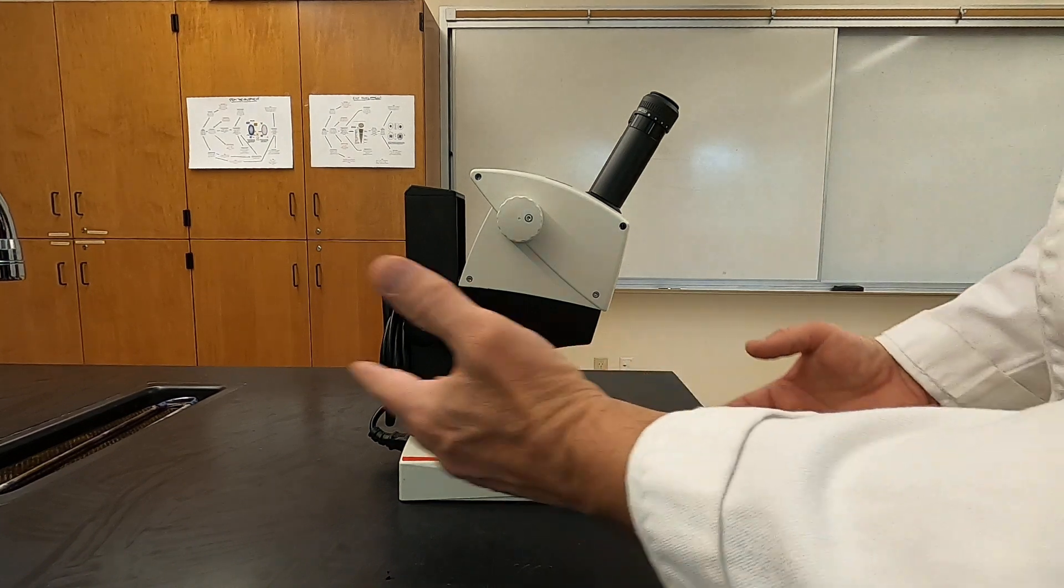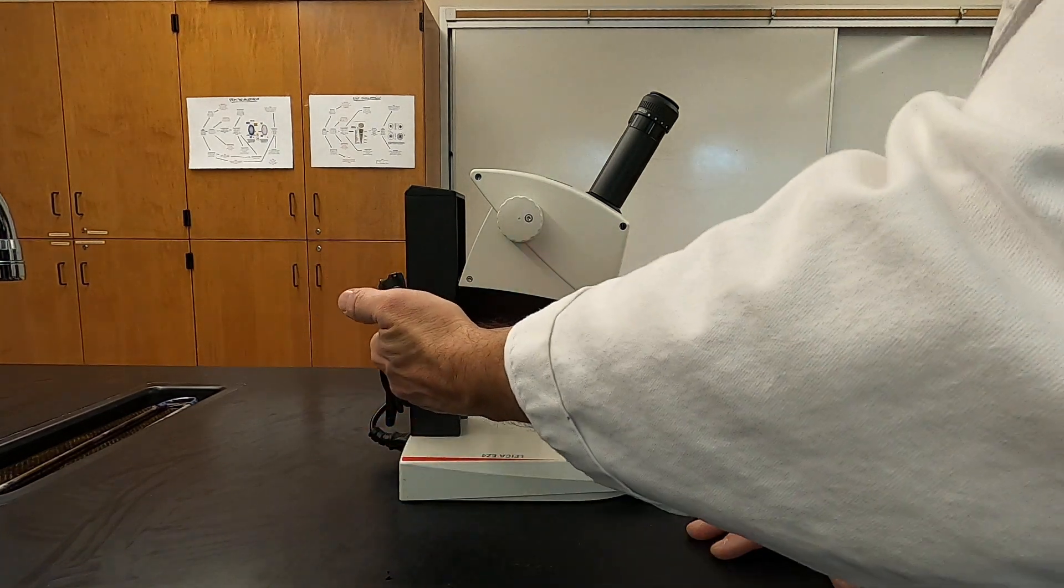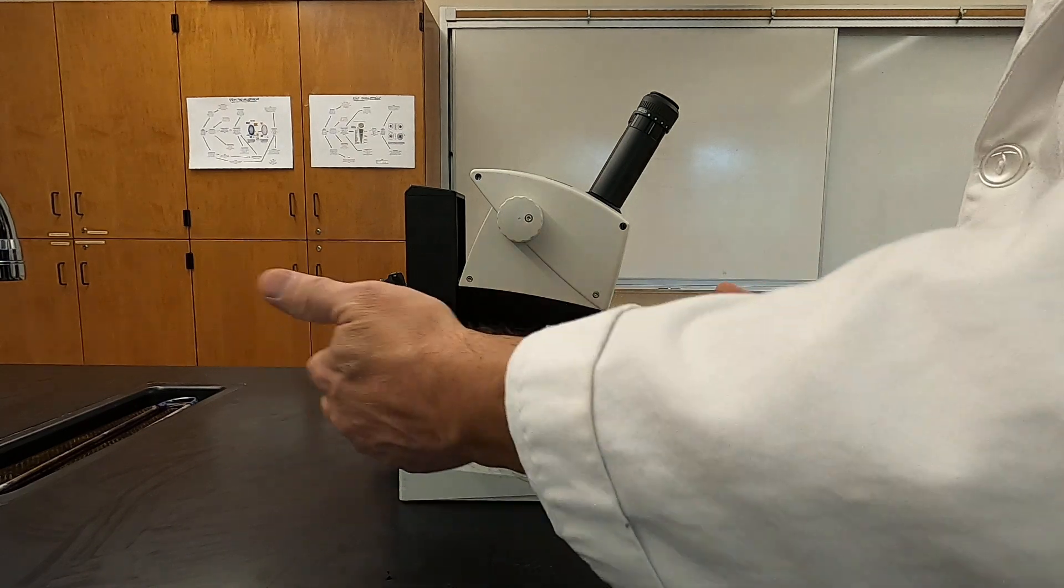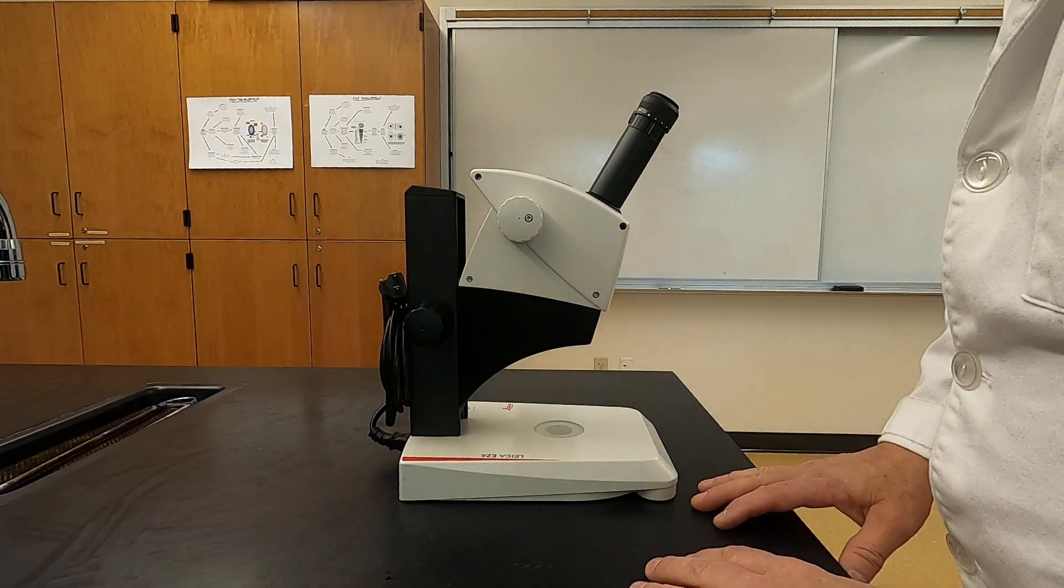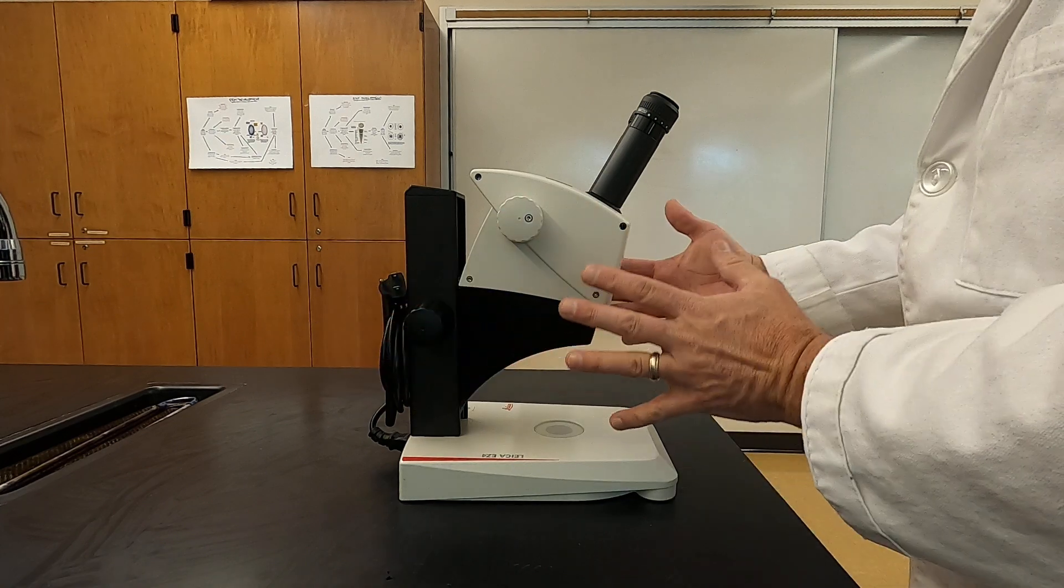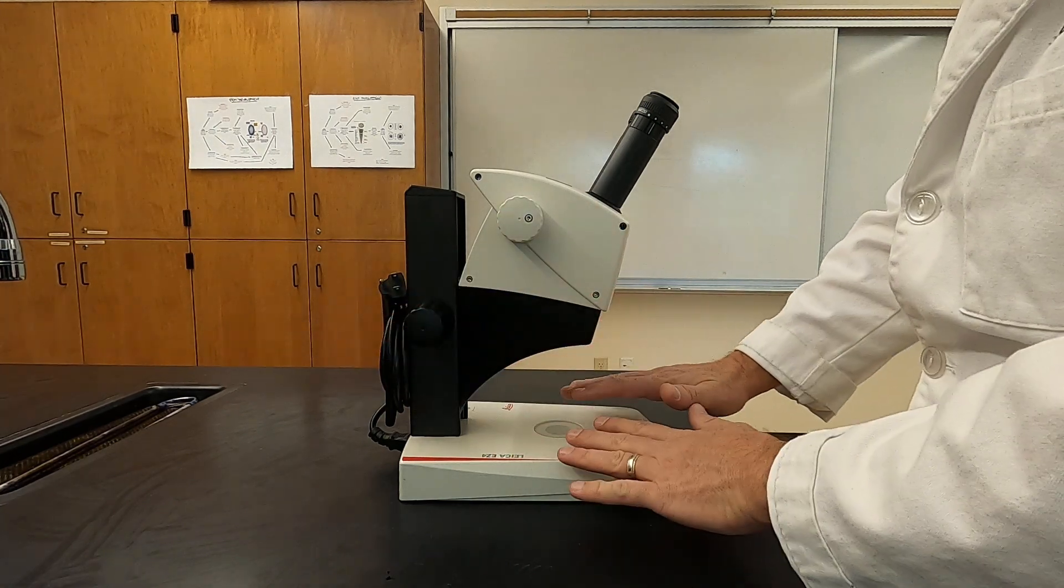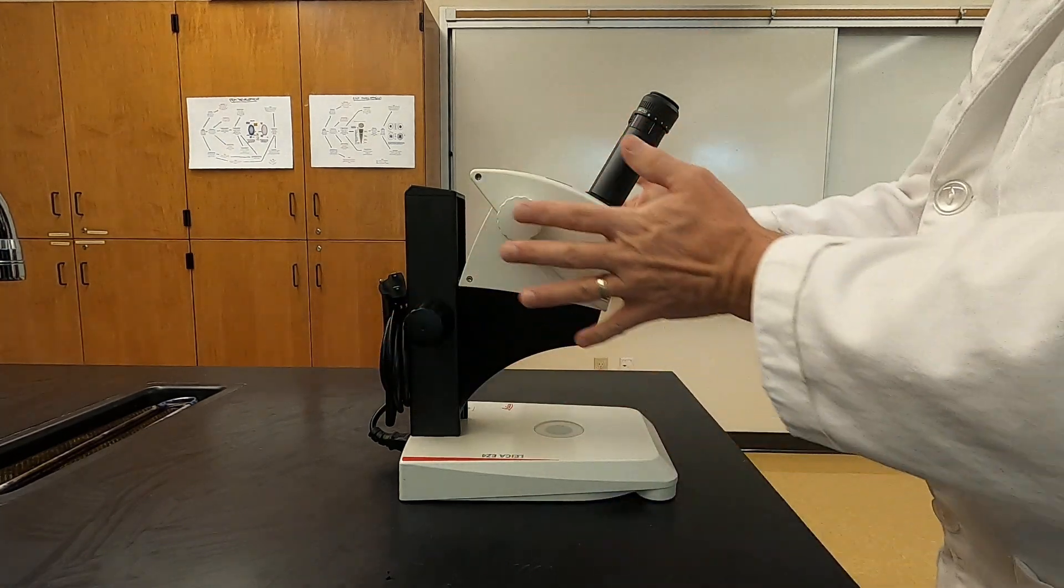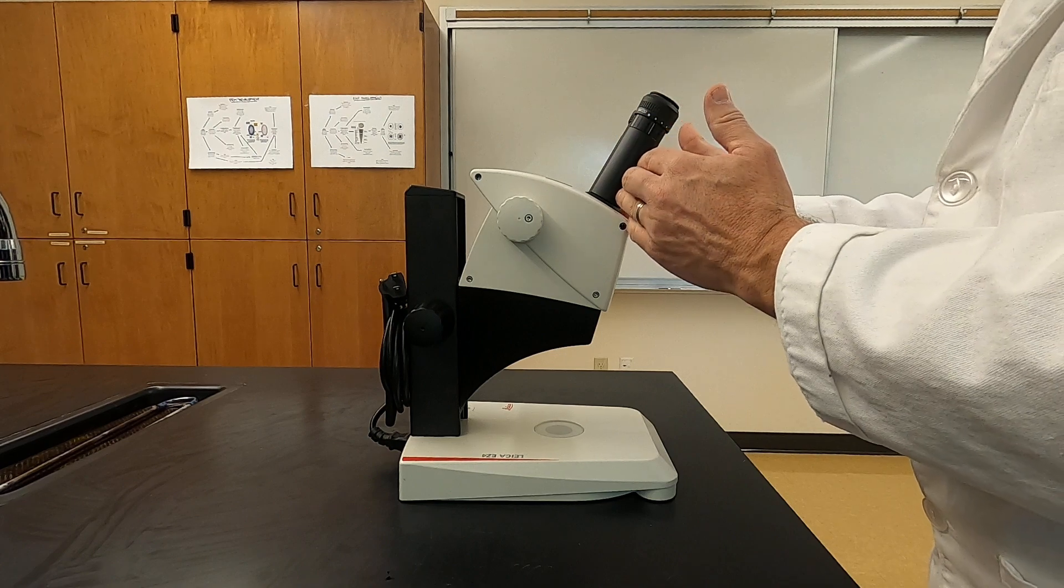So this is what it would look like as you were taking it out. The cord would be neatly wrapped. You'll notice the orientation is the opposite of what we saw before, with a cord in the back and then the open stage in the front and more of the controls in this area with the ocular lenses.